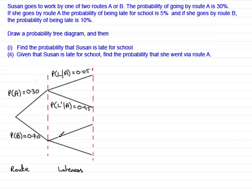And similarly, the probability that she's late given that she took route B is 10%. So that's 0.10.